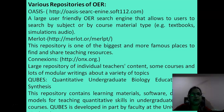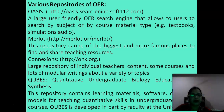Repositories of Open Educational Resources. A large user-friendly Open Educational Resources search engine allows users to search by subject and by course material type. This repository is one of the biggest and most famous places to find and share teaching resources. Another large repository for individual teachers contains courses and lots of modular writing about a variety of topics. QUBS — Quantitative Undergraduate Biology Resources — contains learning materials, software, data, and models for teaching quantitative skills in undergraduate biology courses. QUBS is developed in part by faculty at the University of Pittsburgh.